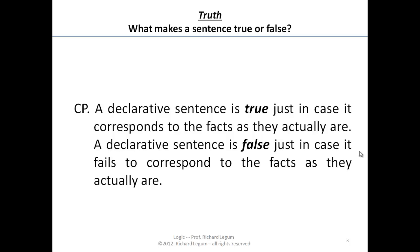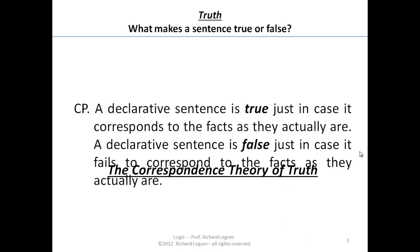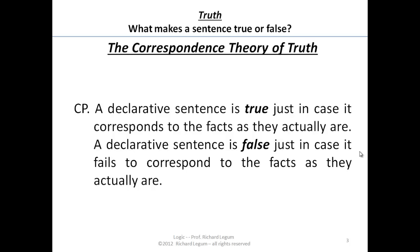And the principle is: a declarative sentence is true just in case it corresponds to the facts as they actually are. A declarative sentence is false just in case it fails to correspond to the facts as they actually are. So it's the correspondence principle, or sometimes called the correspondence theory of truth.